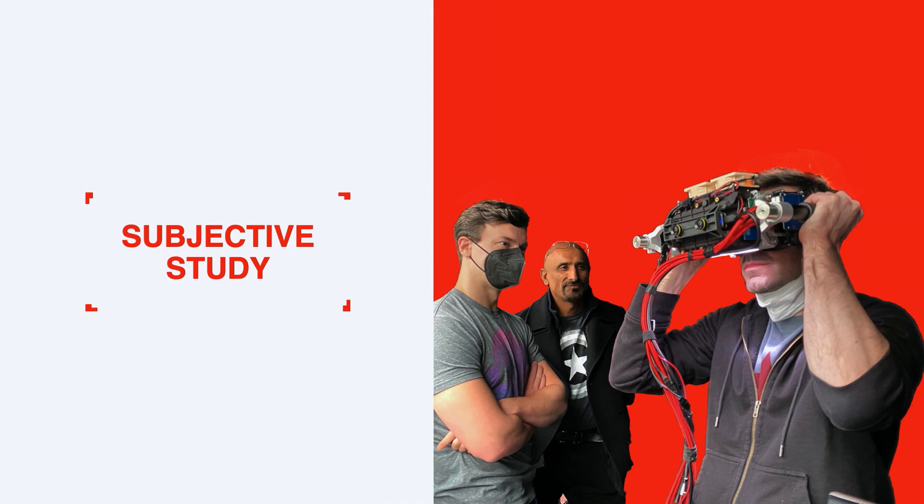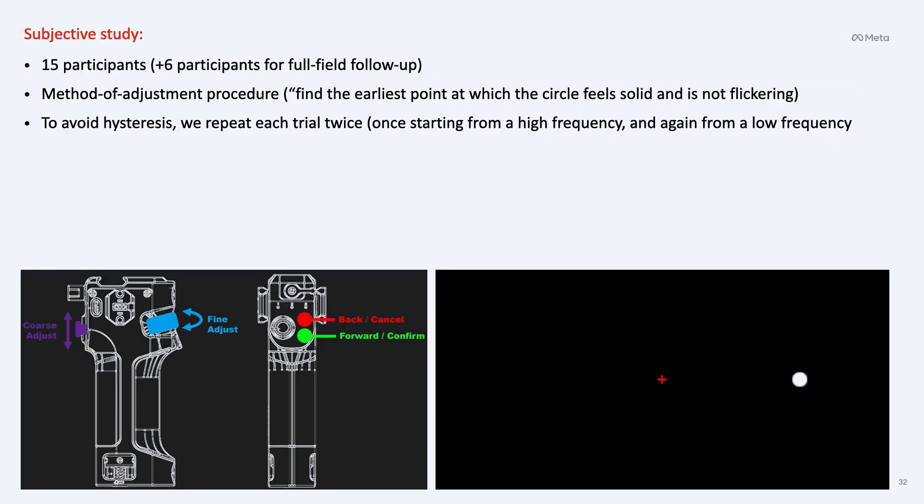What did we actually do in our subjective study? We had 15 participants, plus six additional participants in a small follow-up for a full field. We used the method of adjustment procedure, so people adjusted until they couldn't see the flicker anymore. These are all internal participants who were well-trained professionals of this field. To avoid hysteresis, we repeated each trial twice, one starting at a very high frequency where you do not see any flicker, and the other at a very low frequency where you're starting to see it. You can see on the bottom left the controls from our study using the handles of the device. On the bottom right is what the stimulus would look like. In this case, it's a stimulus that isn't foveated, with a low-luminance fixation cross in the center. It was monocular presentation, right-eye only, nasal.